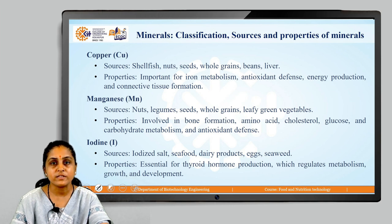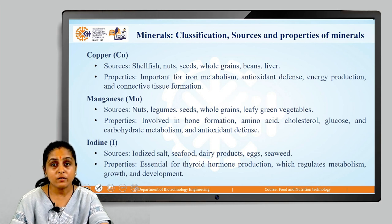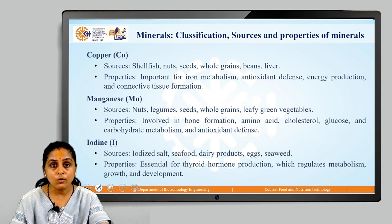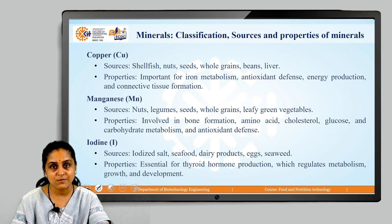The next trace mineral is manganese. Sources of manganese are nuts, legumes, seeds, whole grains and green leafy vegetables. Properties of manganese: they are involved in bone formation, amino acid, cholesterol, glucose and carbohydrate metabolism, and they also act as an antioxidant defense.